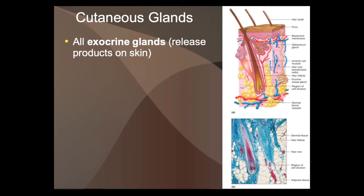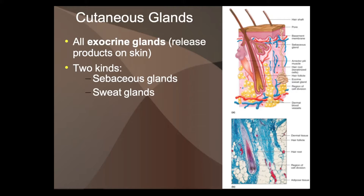All exocrine glands are ones that move fluids or chemicals out. Exocrine glands secrete chemicals onto the skin. This would be oil glands — sebaceous glands is another word for that — and the sweat glands.